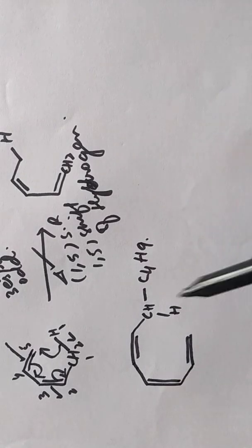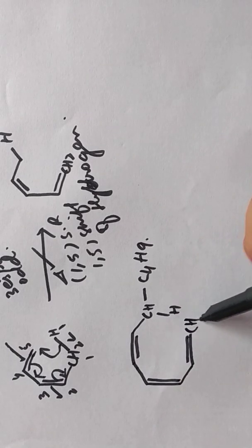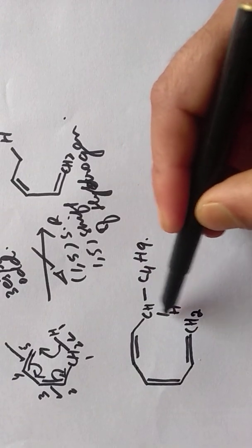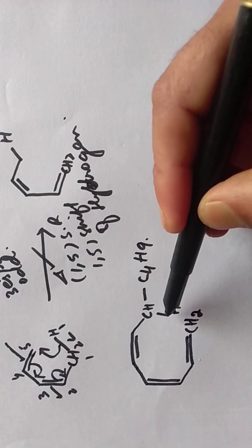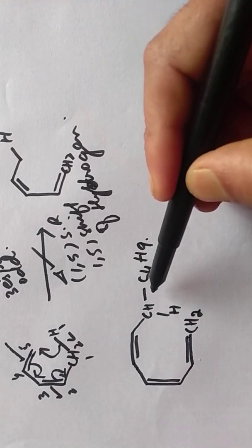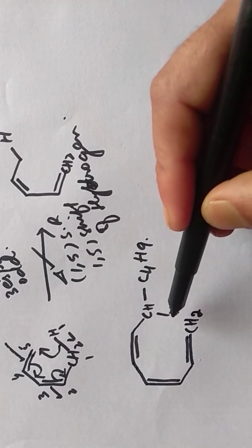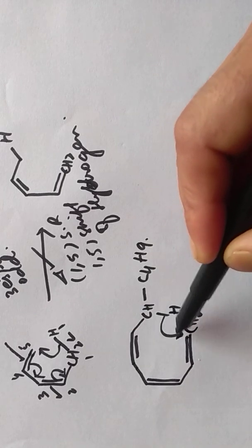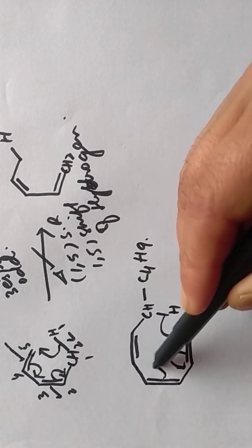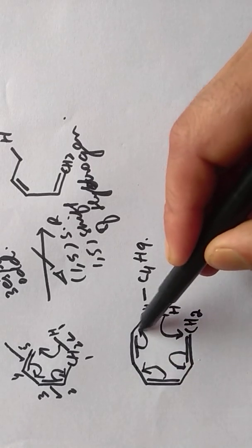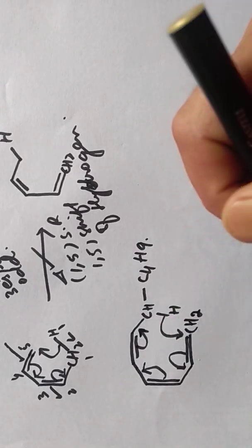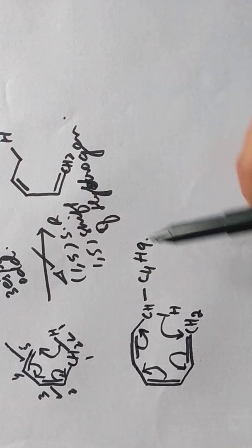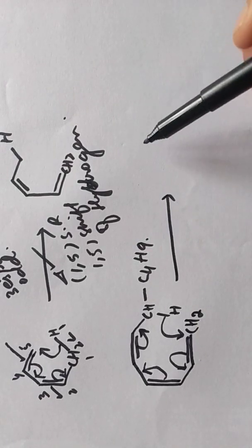This is another example. In this case, this bond is an allylic bond and this bond is also an allylic bond. What happens is this one shifts to this side, this one shifts to this side, this one shifts to this side, and this one shifts to this side. We get the product like this one.